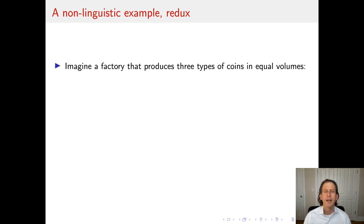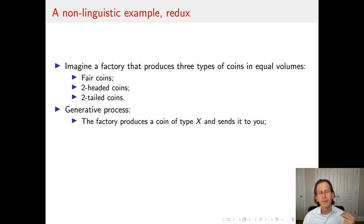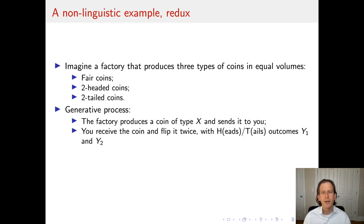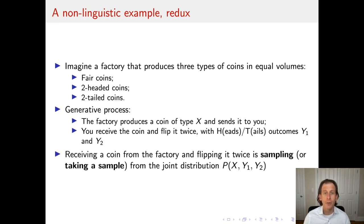So we imagine a factory that produces three types of coins in equal volumes: fair coins, two-headed coins, and two-tailed coins. We imagine a generative process where the factory produces a coin of some type — we'll call that type X — sends it to you, and you receive the coin and flip it twice. Each coin flip outcome is heads or tails. The coin type is the random variable X and the two flip outcomes are Y1 and Y2. Receiving a coin from the factory and flipping it twice would be sampling from the joint distribution of X, Y1, and Y2.